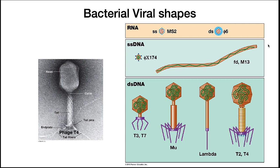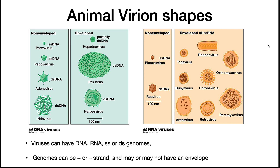Many bacteriophage are structurally complex. Many animal viruses have an envelope. Whole virions enter the host cell, and when the virus leaves, it drapes itself in the host membrane. Viral proteins are embedded in the membrane that allow host attachment and are involved in viral release. Many plant viruses are single-stranded RNA. Double-stranded genomes are rare. However, as with bacteriophage, all four types of genomes are represented in eukaryotic viruses.